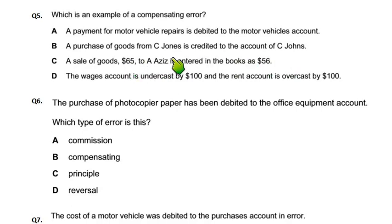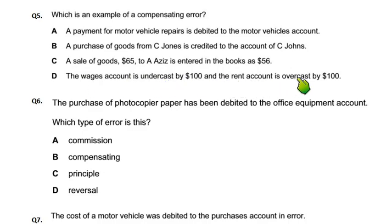Option D: wages account is undercasted and rent account is overcasted. Wages ko under kar diya aur rent ko over kar diya — wages ko undercost kar diya aur rent ko overcost kar diya. Ye kya cheez hai?